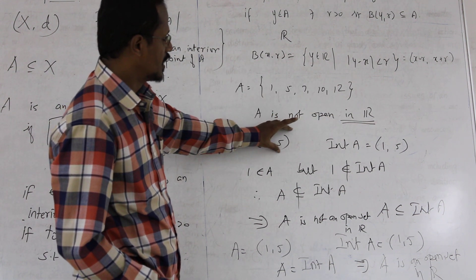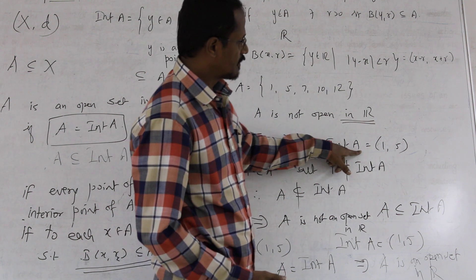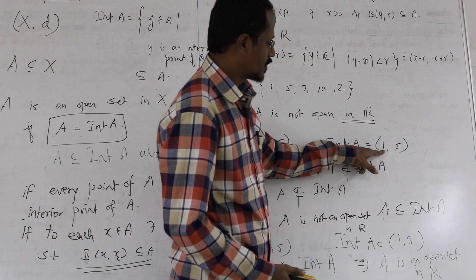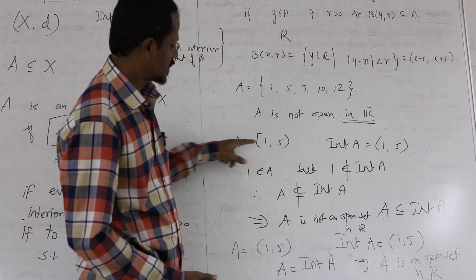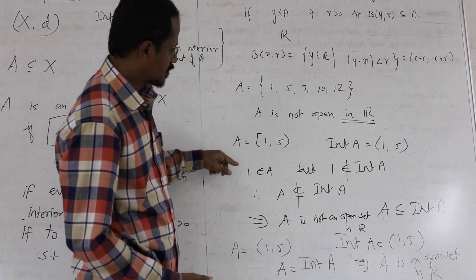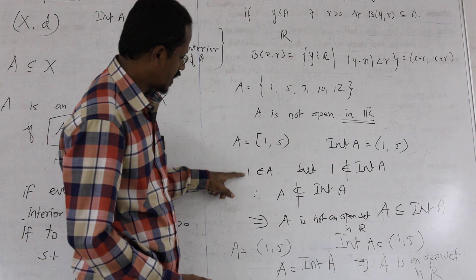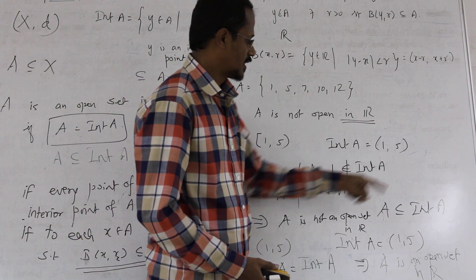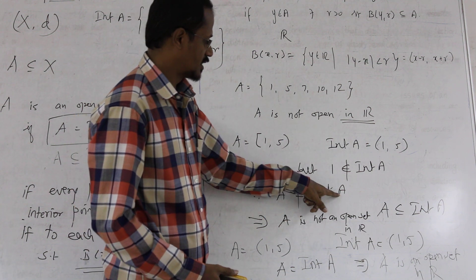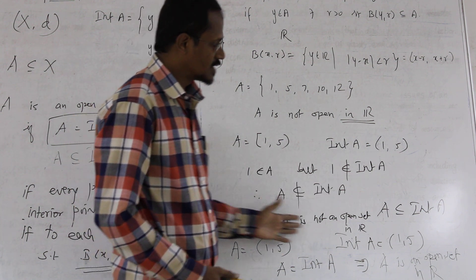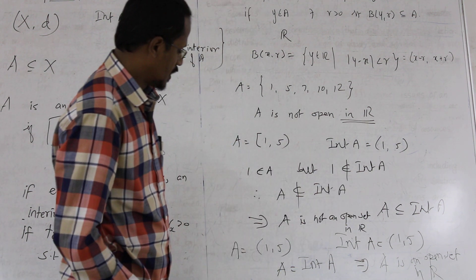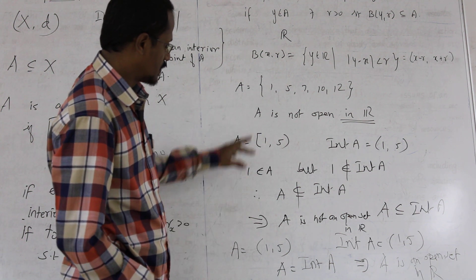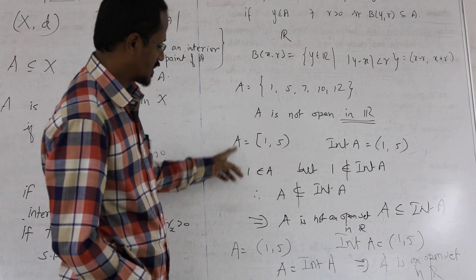To recap the examples: for A = [1, 5], we noted the interior is (1, 5). The point 1 is not in the interior whereas 1 is in the set A, so A ≠ interior(A) and A is not open. For A = (1, 5), A equals its interior, and hence A is an open set.